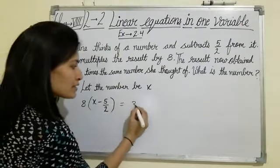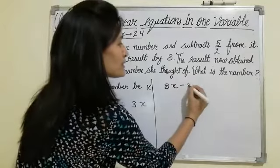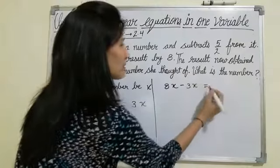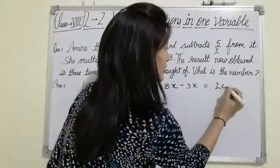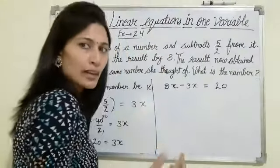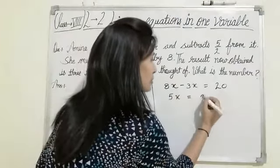Next, 8x. Transposing 3x to LHS and minus 20 to RHS. 3x is positive, so convert into negative, minus 3x equals to, this is minus 20 so convert into plus 20. 8x minus 3x is 5x equals to 20.